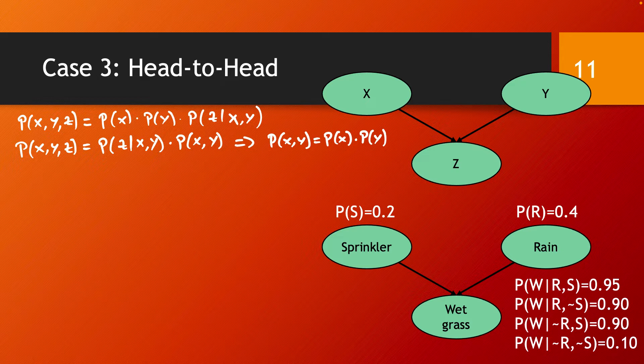All of this is in the case when z is not observed. Now when z is observed — in other words when we have knowledge about z — this knowledge can be propagated back to both x and y, and in this case x and y are not independent. This is because z, and in fact if we had a larger graph all of its descendants, separate x and y.